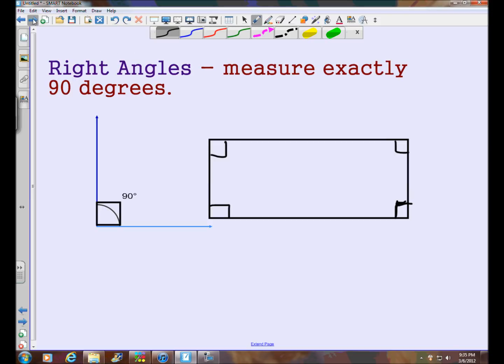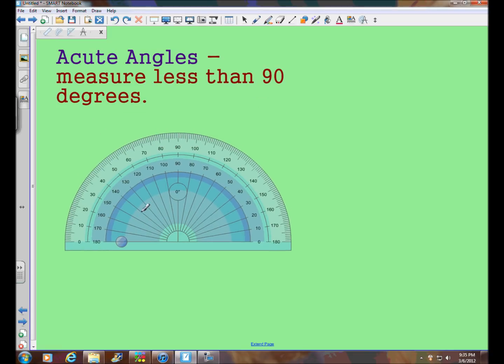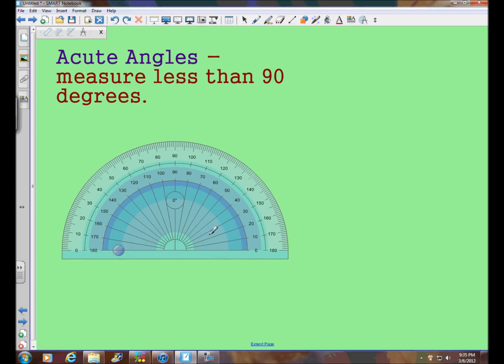Now it leads us into our next type of angle, which are acute angles. And acute angles measure less than 90 degrees. So if we take a look at our protractor and we decide to make an angle.